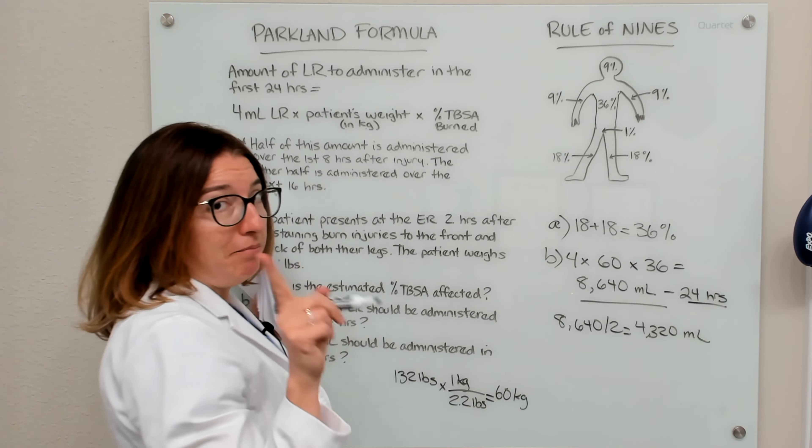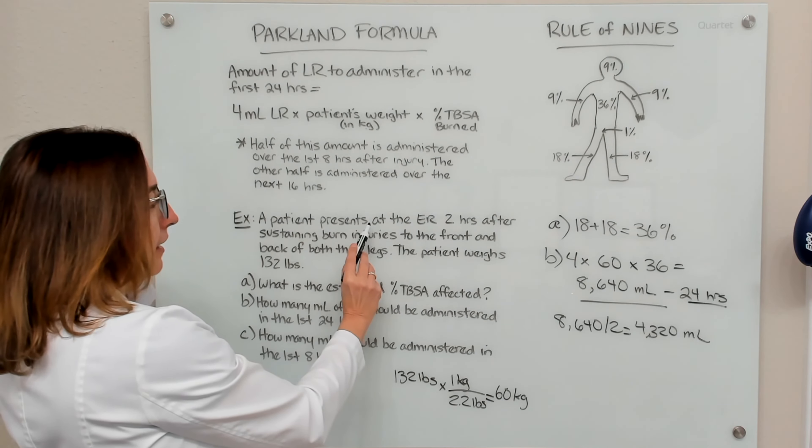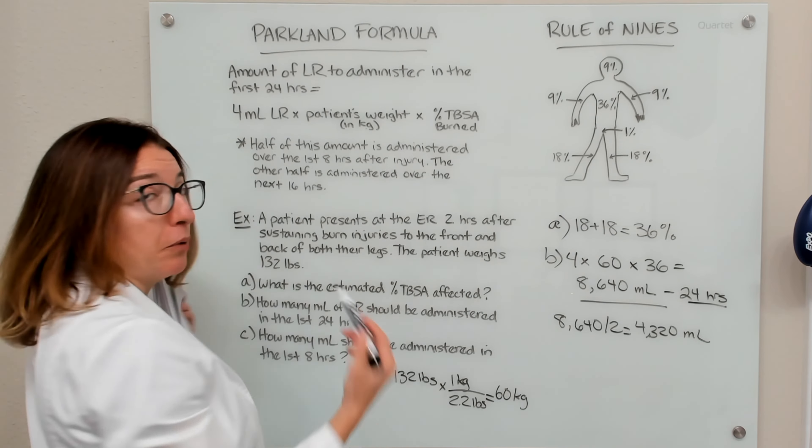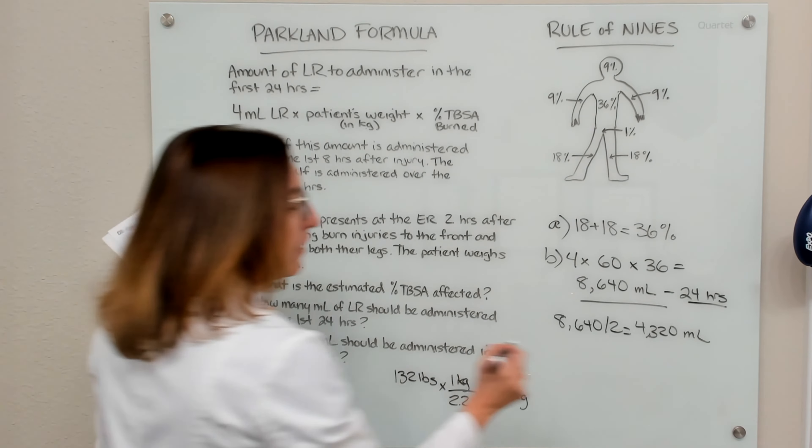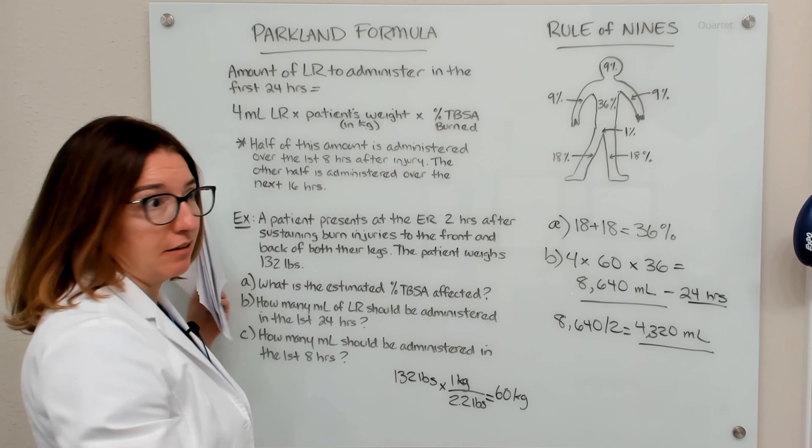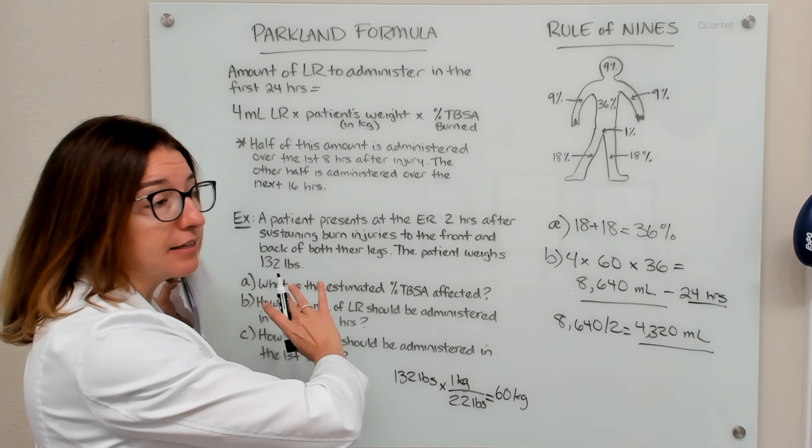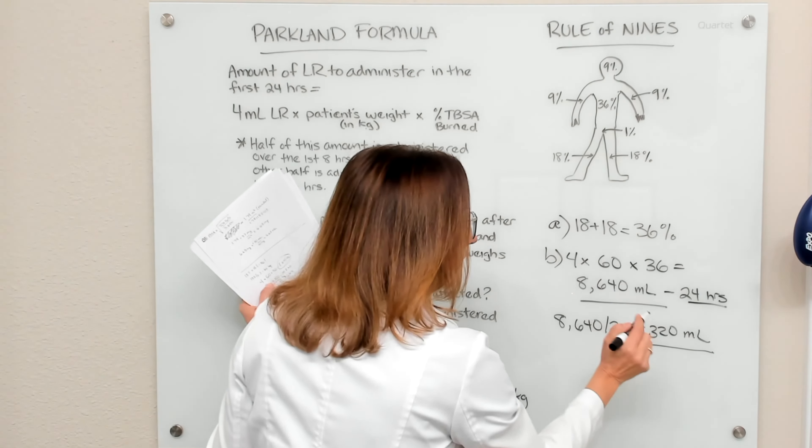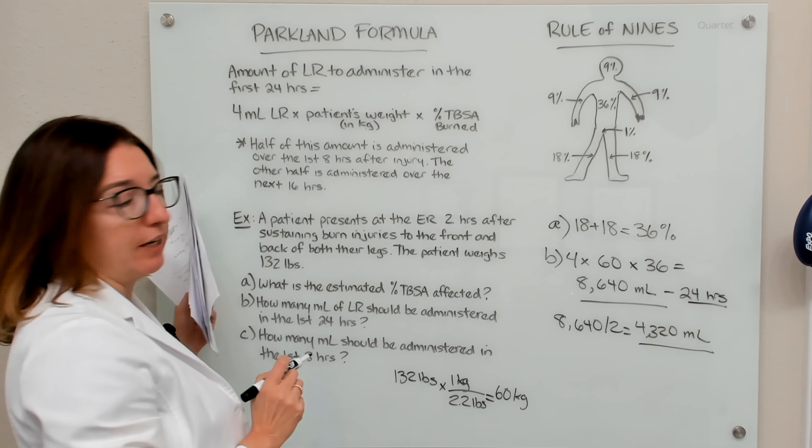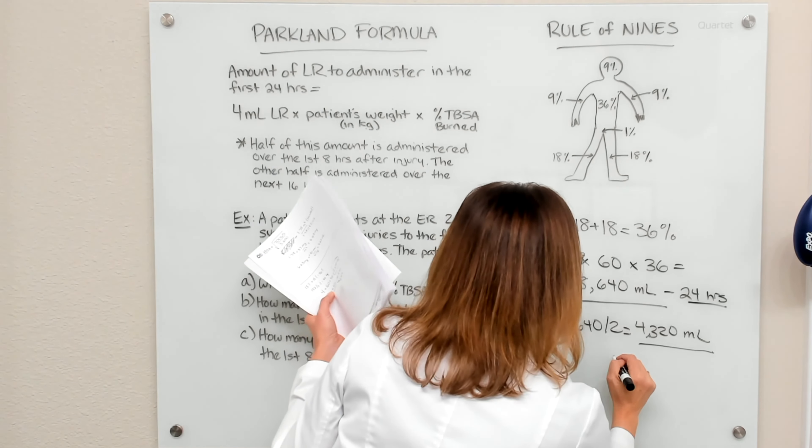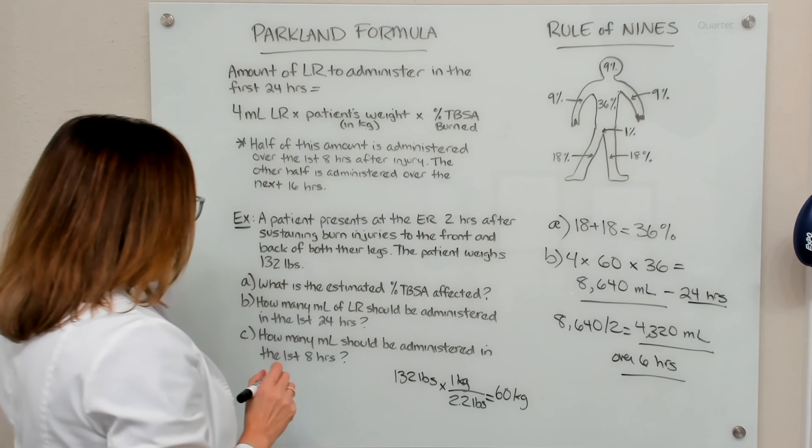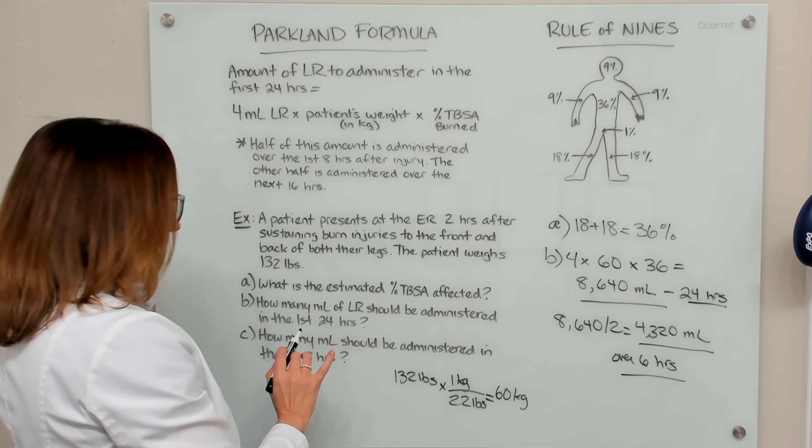you end up with 4,320 milliliters that needs to be given in the first eight hours. Now keep in mind that our patient presented at the ER two hours after sustaining those burn injuries. So we are actually going to need to give this amount over six hours because two hours have already passed and we need to get that much in the patient in that first eight hours since the time of injury.